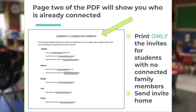When you choose 'Print Paper Invites,' scroll to the second page of the PDF. This is going to show you who is already connected to your class. Simply print the invites for students with no connected family member yet and send that invite home.